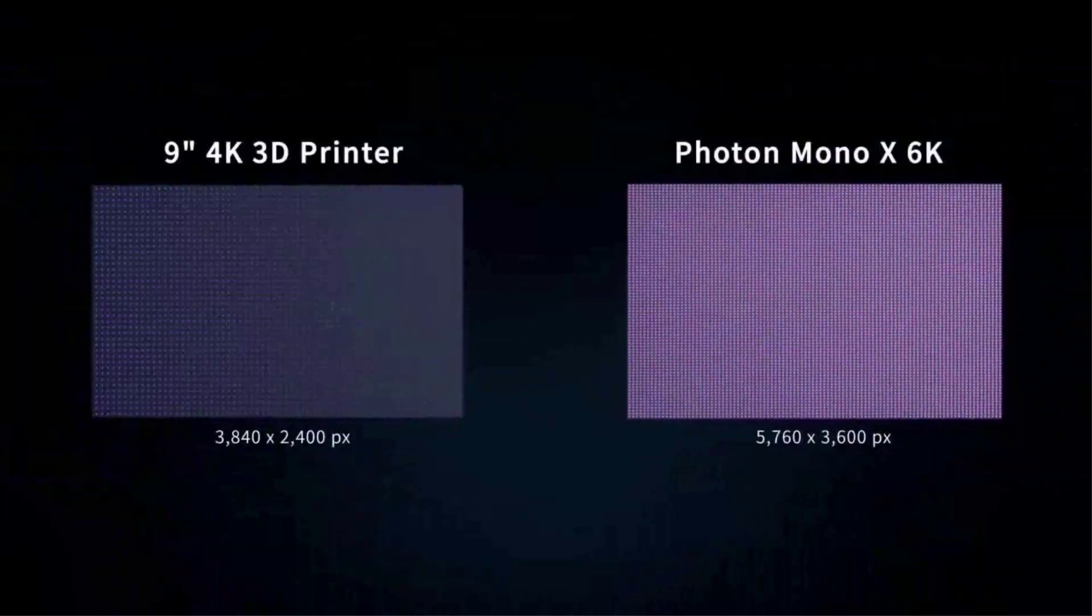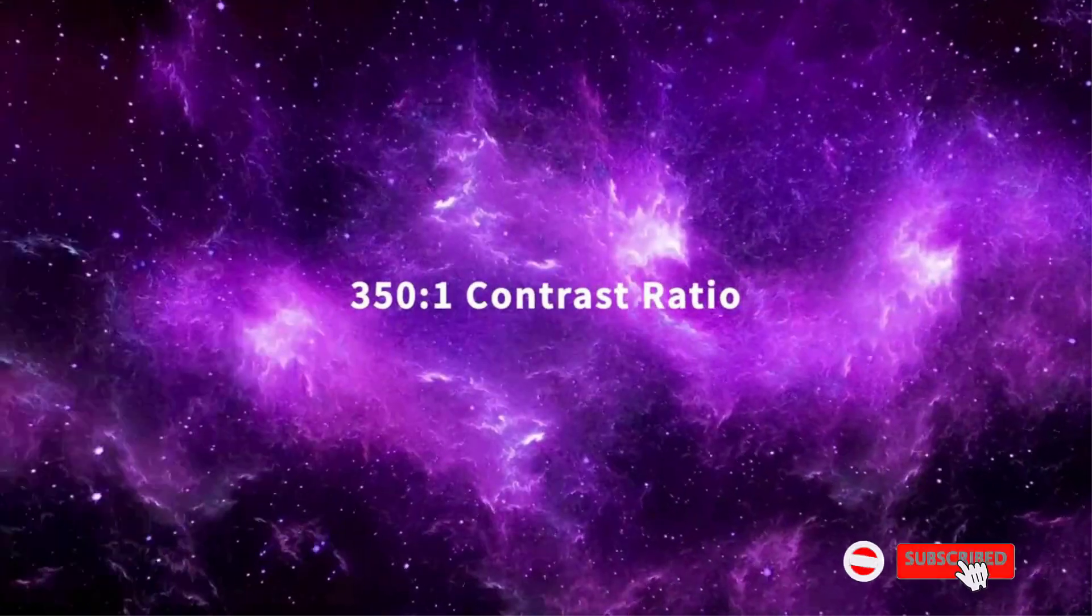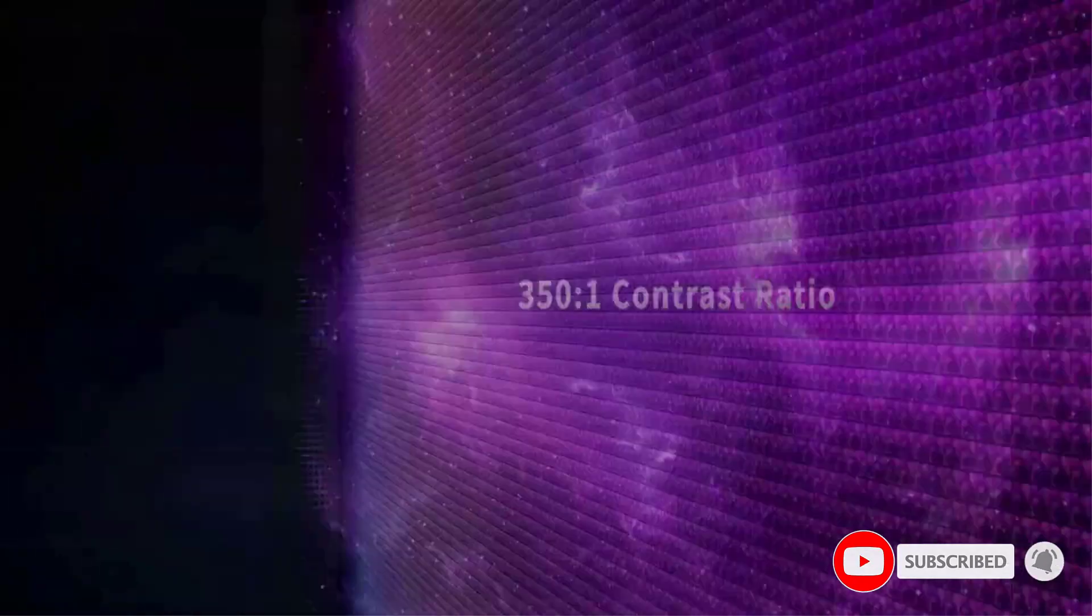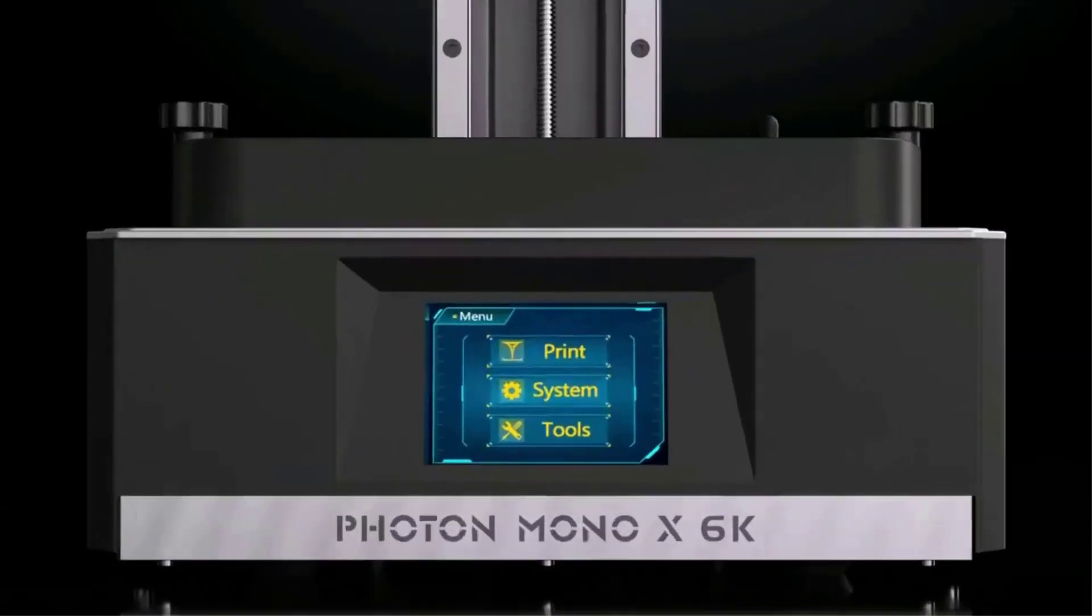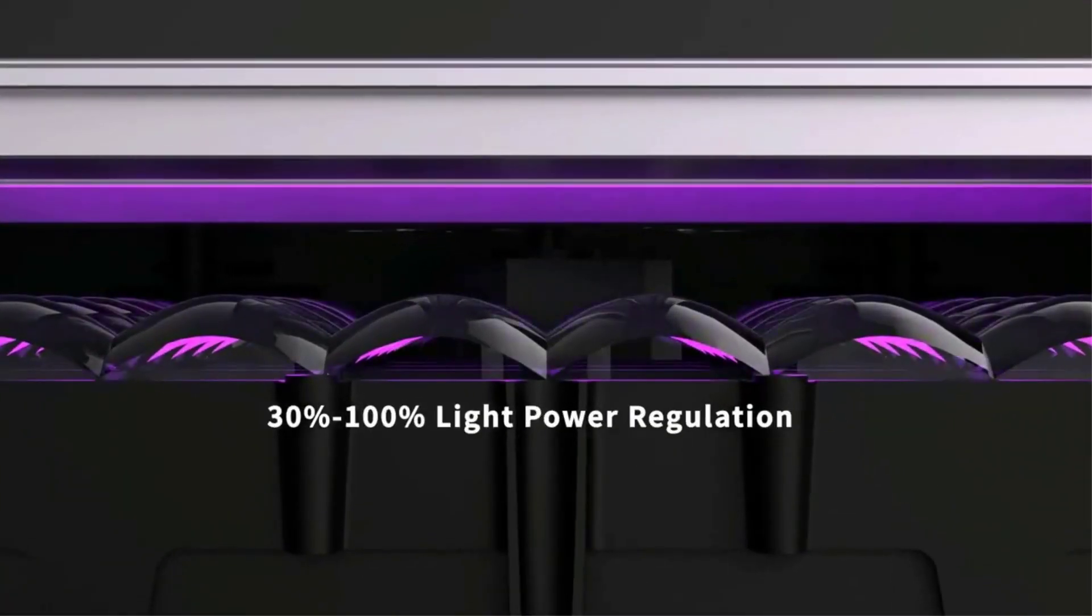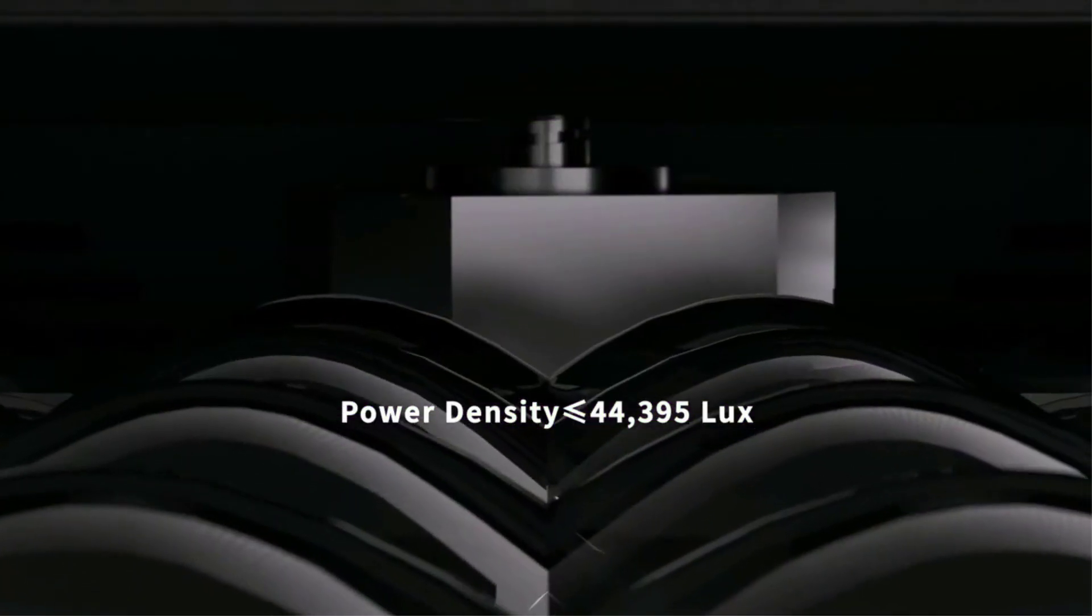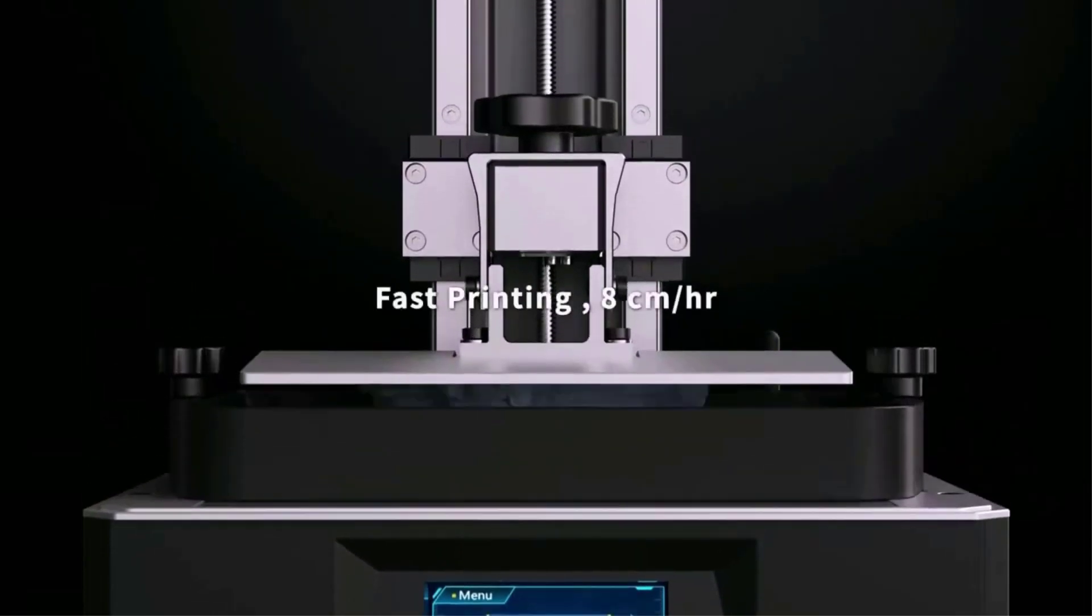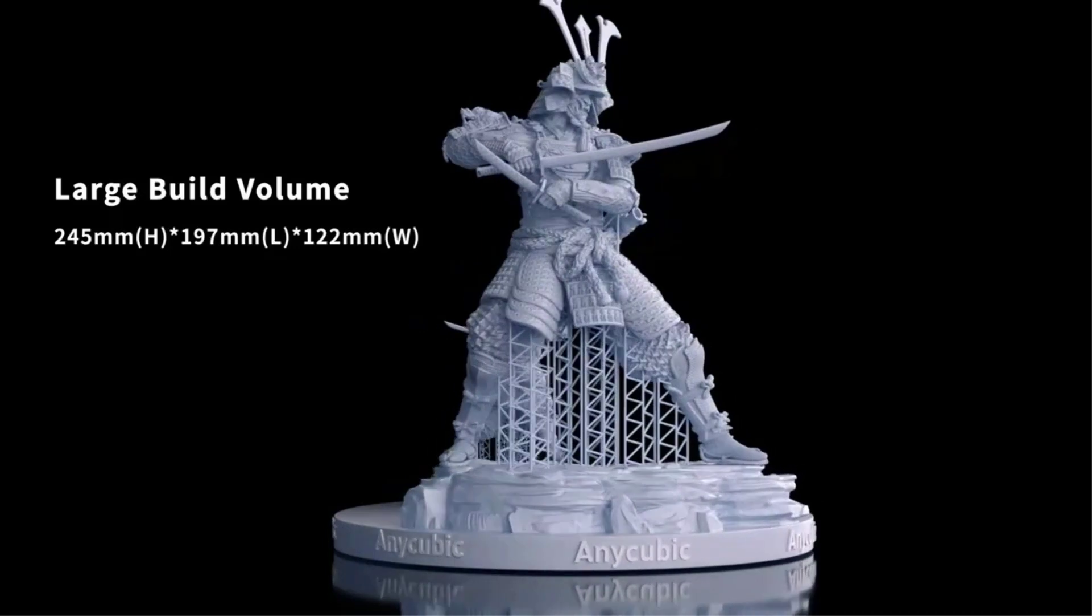Anycubic Photon Mono X 6K 3D printer is equipped with a 9.25-inch monochrome screen, which is 138% larger than a normal 6-inch screen. The monochromatic screen lasts for X longer than the RGB LCD screen, and a special replaceable scratch-resistant film is added above the screen to save your maintenance costs. The printer can print up to 9.6 by 7.8 by 4.8 inches (HWD). The large volume can print large-size models or multiple models at one time, effectively improving your work efficiency.